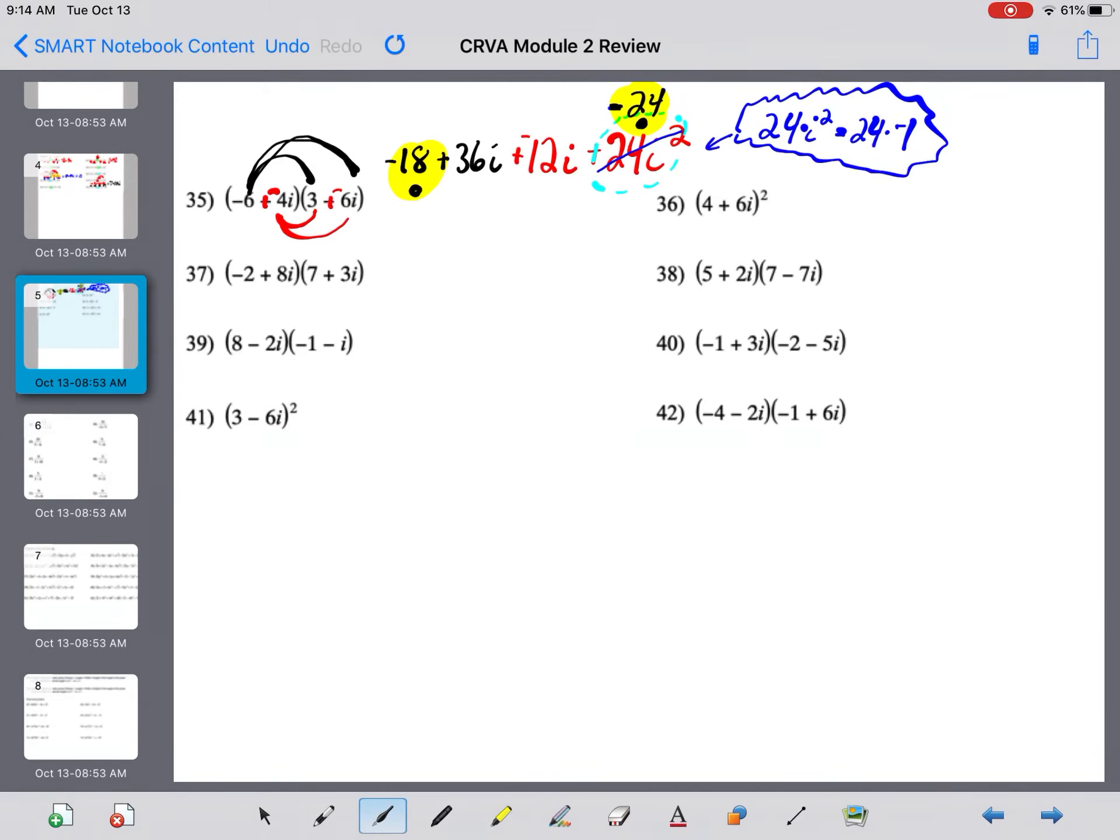And, then, check this out. I've got these imaginary parts that I can combine, and that gives you 24i. So, you've foiled or multiplied polynomials together. Now, with the i's, it just gives us just a little bit more simplifying, folks. But, not too bad, right?